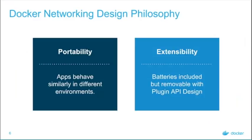The Docker networking design philosophy is around two key areas: portability and extensibility. The portability aspect is that applications can behave identically in various different environments — we want to simplify things so that applications can move between different hosts and still operate in the same manner. The other concept is extensibility. Docker provides a huge amount of functionality and technology, but they also add in the capability with things like their APIs and plugin infrastructure for you to extend that and include additional functionality, along with exposing the API so that you can automate a lot of tasks to ease scaling and deployment.